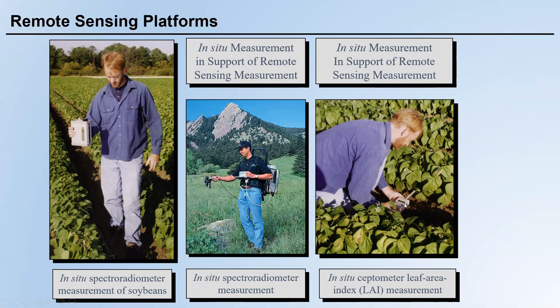For example, on the right side we have a small instrument — actually not a spectrometer. A spectrometer only collects reflectance, but this one, a ceptometer, can be used to directly measure LAI, or leaf area index. LAI is an index to indicate the size of leaves for vegetation and is a direct indicator of biomass of vegetation, which in turn indicates vegetation health.